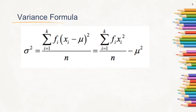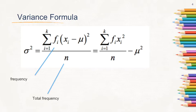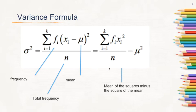This is the formula for calculating the variance. We use the Greek letter sigma, so sigma squared is equal to the summation of f times (x minus mu) squared, divided by n. Here f is the frequency, n is the total frequency, and mu is the population mean. There is also an alternative formula: variance equals the mean of the squares minus the square of the mean.